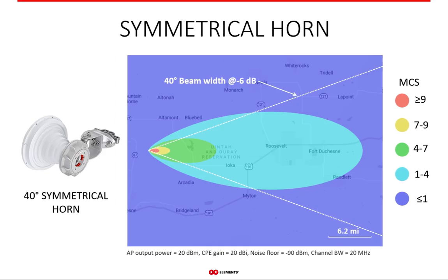Our symmetrical horns have no side lobes, which is clearly seen from this plot — just a nice pale-shaped beam pointing forward. Let me emphasize again: these images are not created in Photoshop by a graphics person. They are real, physics-based simulations, which is the closest thing to reality you can get.